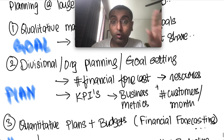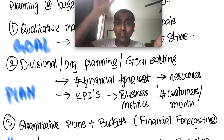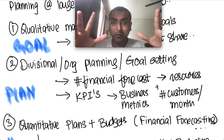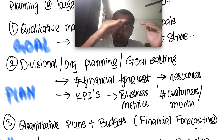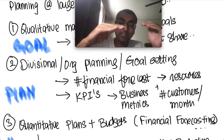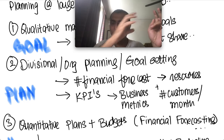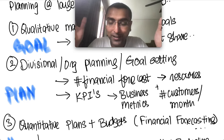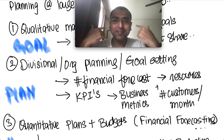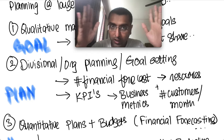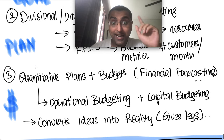Then divisional leaders take that big, hairy, audacious goal and convert it into a plan with KPIs — showing how they'll get there over four years, breaking it down by customers acquired each month or quarter. Just like deciding to become a doctor means planning college first, then an advanced degree. So the sequence is: goal and strategy first, then a detailed plan.